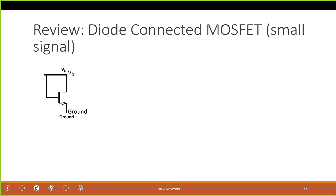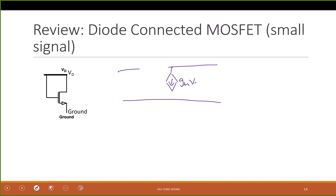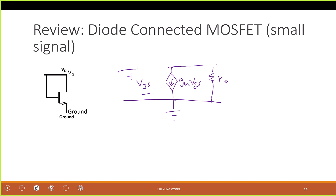So that is the large signal model. How about the small signal? Easy. What we need to do is just draw the small signal circuit like what we did before. Gm·Vgs — this is Vgs — and then I have R0. Let's say this is connected to ground. So this is the backbone.